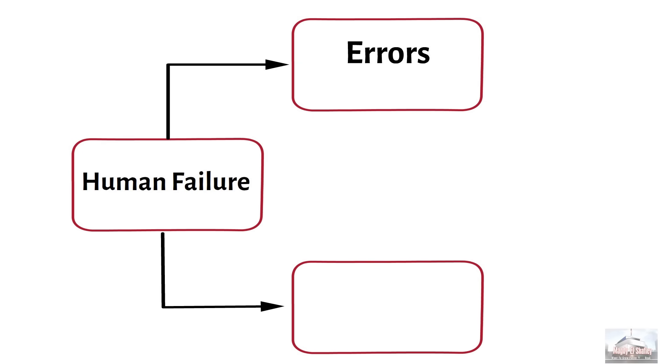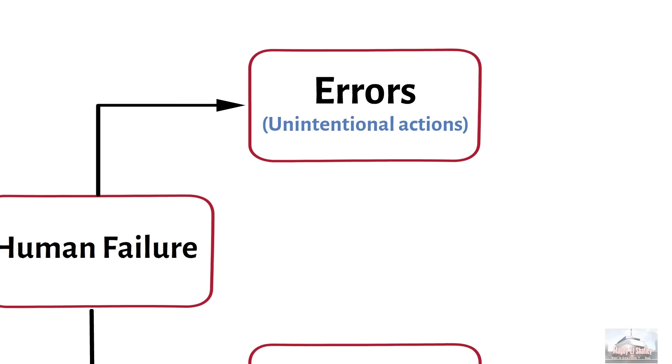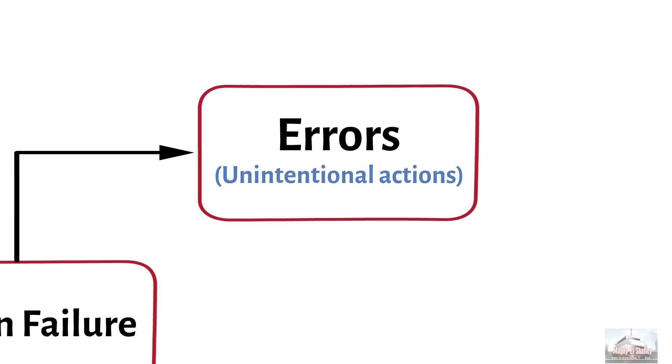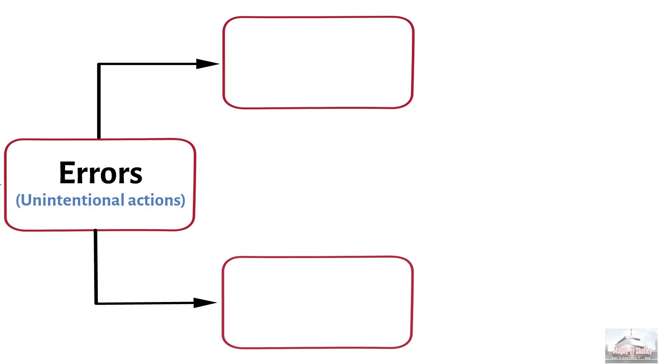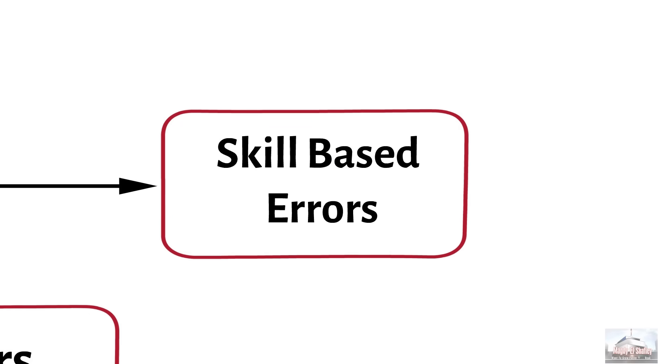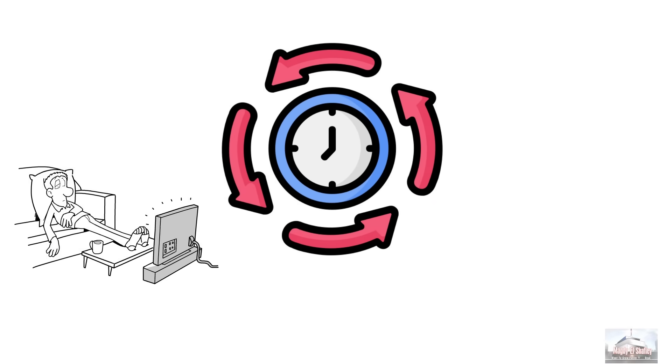Errors, unintentional actions or mistakes. Violations, deliberate deviations from rules or procedures. Let's talk about the errors. Errors can be divided into two main categories: skill-based errors and mistakes. So what's the difference between them? Skill-based errors occur in familiar and routine tasks that can often be performed without conscious attention.